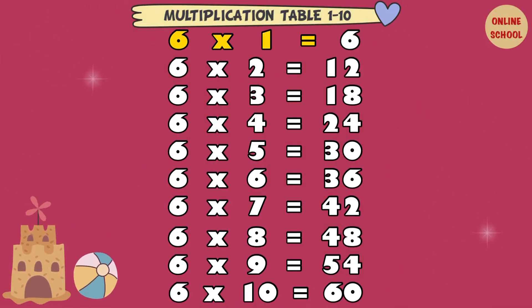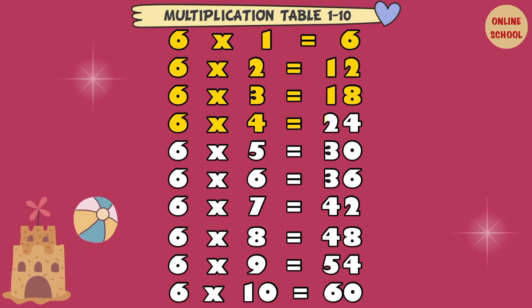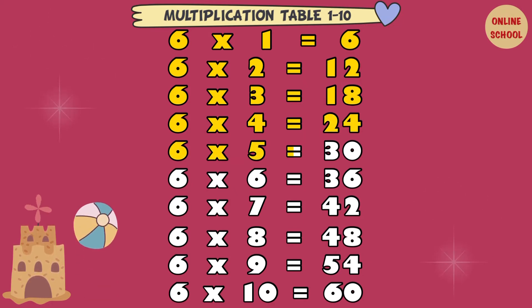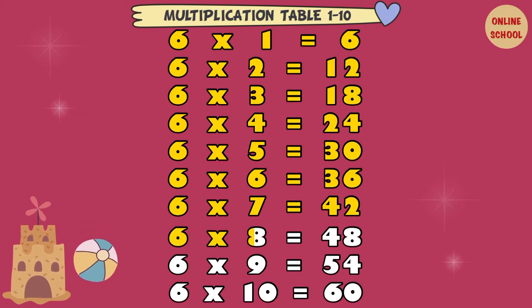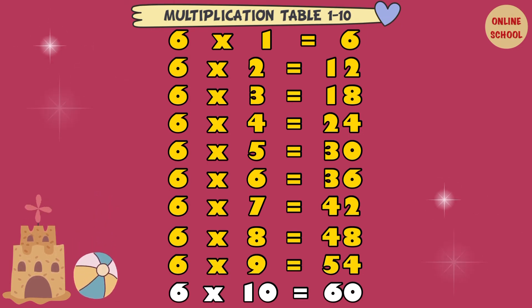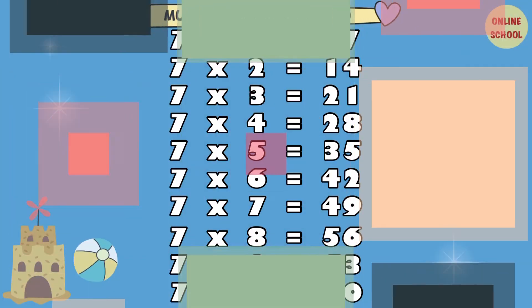6 x 1 equal 6. 6 x 2 equal 12. 6 x 3 equal 18. 6 x 4 equal 24. 6 x 5 equal 30. 6 x 6 equal 36. 6 x 7 equal 42. 6 x 8 equal 48. 6 x 9 equal 54. 6 x 10 equal 60.